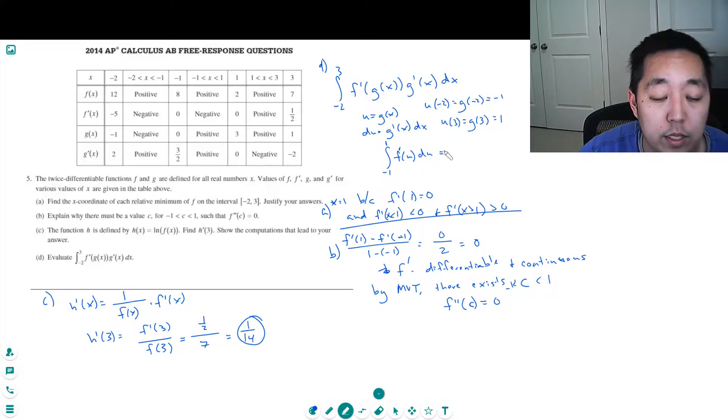By the fundamental theorem of calculus, that's f of 1 minus f of negative 1. f of 1 is 2, f of negative 1 is 8, so that's negative 6.